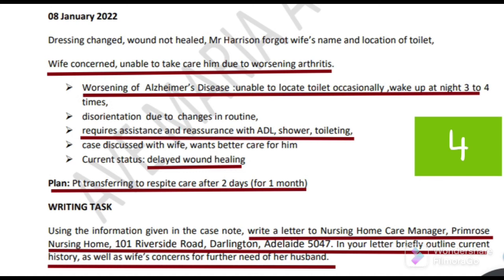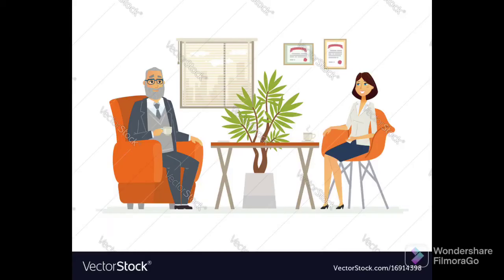Once again, the writing task says: using information given in the case note, write a letter to nursing home care manager, Prime Bros Nursing Home, 101 Riverside Road, Darlington, Adelaide 150407. In your letter, briefly outline current history as well as wife's concern for further need of her husband. Before going to the letter writing, we have to find out what is the recent present medical condition, what is the requirement, and how to write the present medical paragraph. The recent medical condition here is worsening Alzheimer's disease as well as delayed wound healing - both must be mentioned.